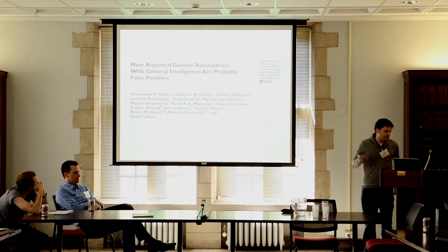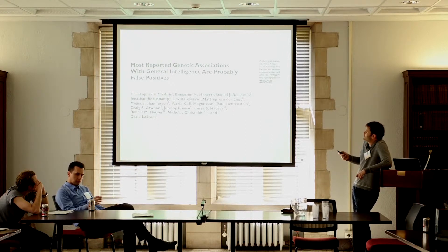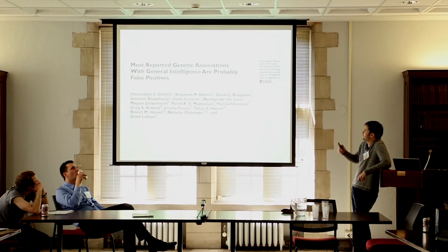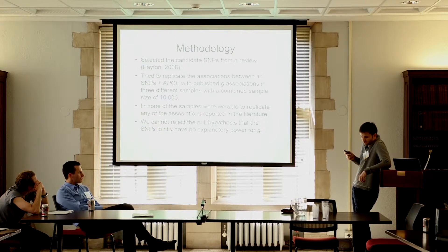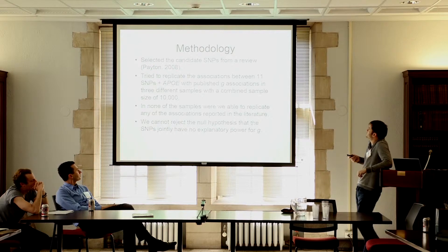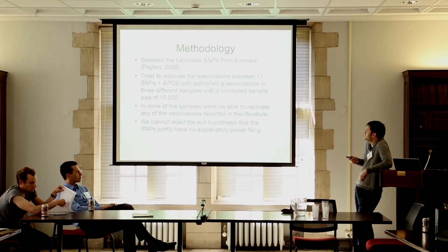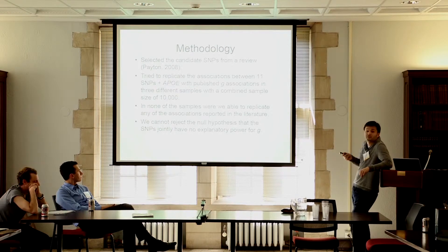Let me tell you about one study I think is illustrative of a more general pattern in this literature. The lead author is Chris Chabry, and it was an attempt to systematically replicate candidate gene associations with general intelligence. We selected a bunch of SNPs from a published review article, then tried to replicate associations between 12 genetic variants and G in three different samples — a Swedish sample and two US samples. In none of these samples were we able to replicate any of the associations reported in the literature.